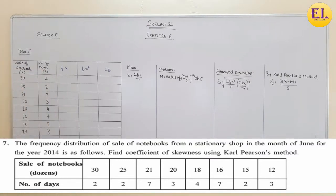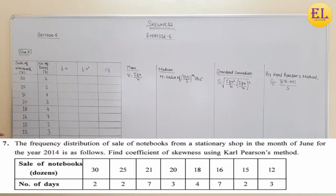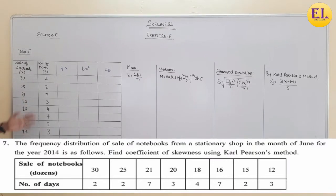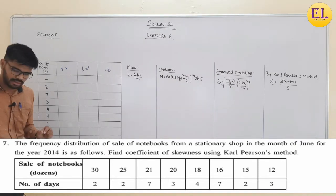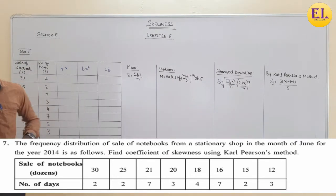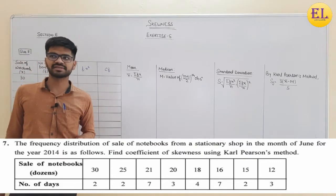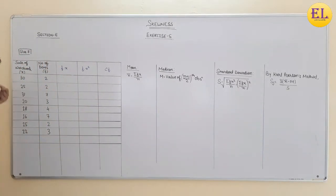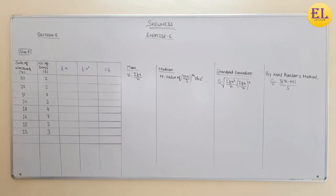So what do we need to do? We need to find coefficient of skewness by using Carl Pearson's method. We need to find mean, then median, then standard deviation. And what we have found, we will put values in the formula to get the coefficient of skewness.